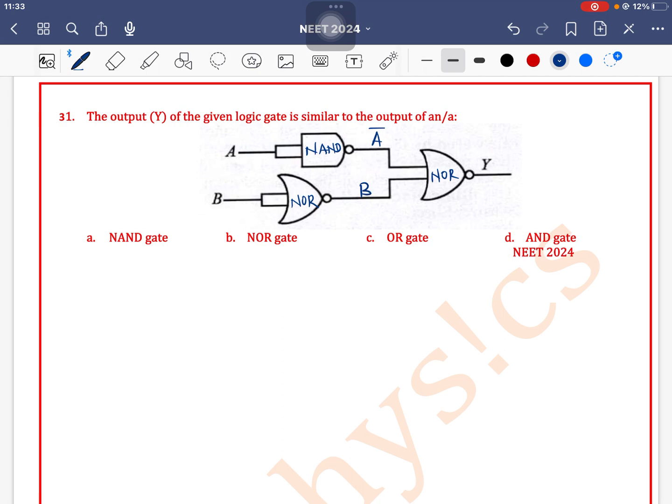So it will be B bar. Now output of Y will be A bar OR B bar, the whole bar. If we apply de Morgan's theorem it will give A bar bar and B bar bar. A bar bar is A, B bar bar is B, so A and B means this is an AND gate. Option D is the correct one.